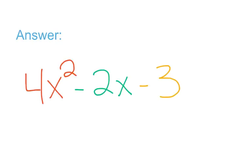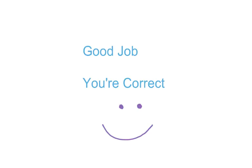Your final answer is 4x² - 2x - 3. Congratulations, you now know how to divide a polynomial by a monomial!